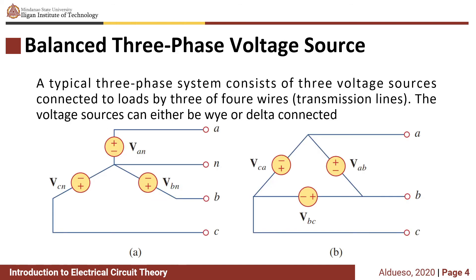A typical three-phase system consists of three voltage sources connected to loads by three or four wires, called transmission lines. The voltage sources can either be Y-connected or delta-connected.